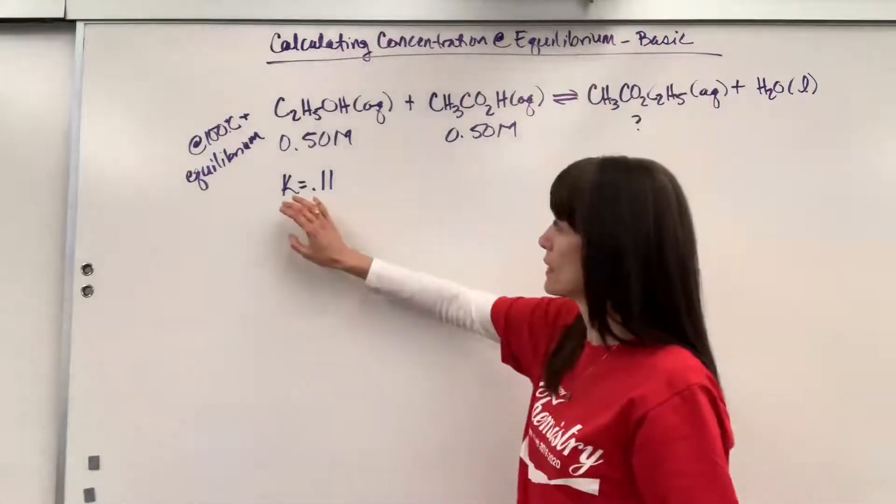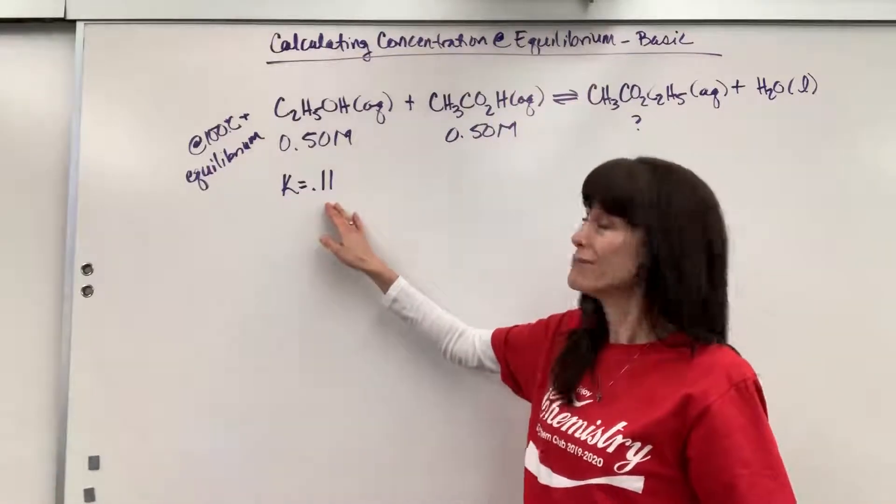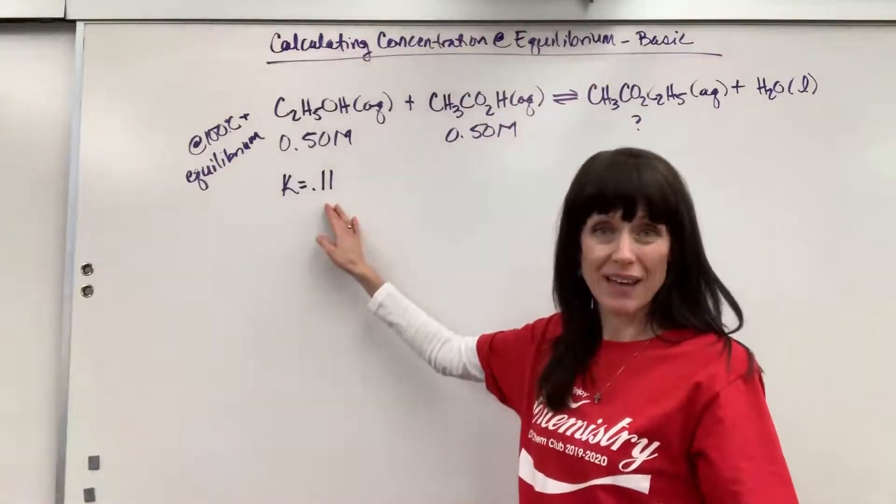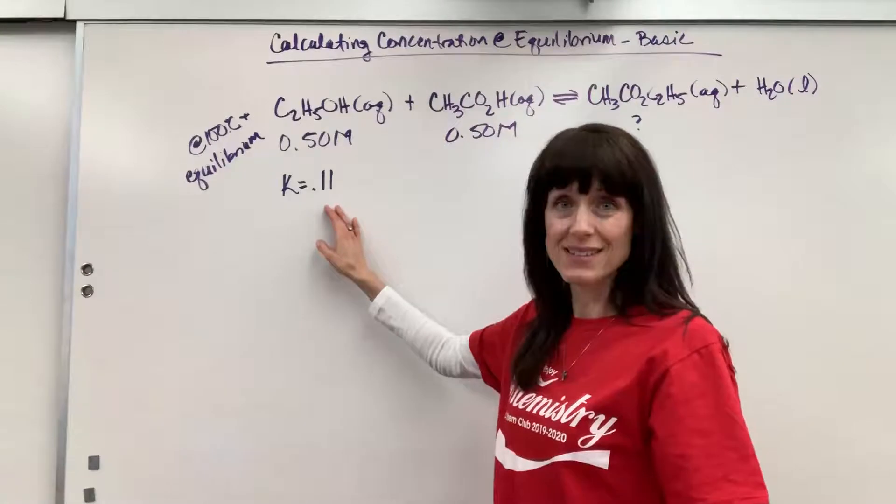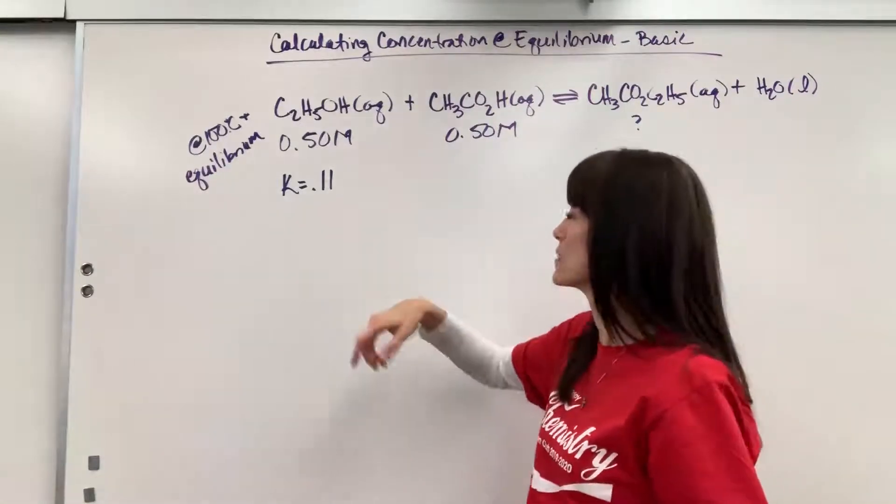We're told that the equilibrium constant is 0.11. It's less than 1, so that means it's reactant favored. We're going to have more reactants than products.